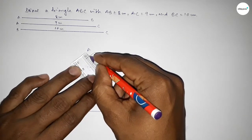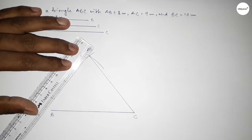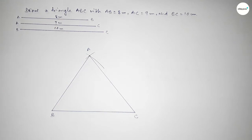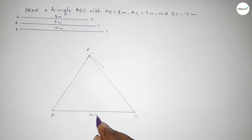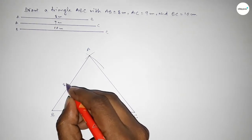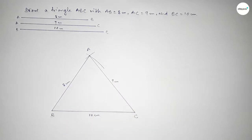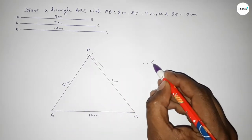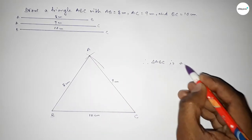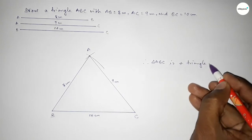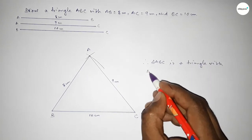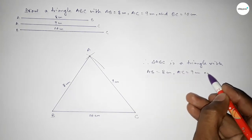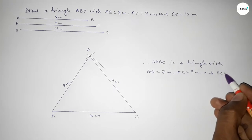Now joining A and C, next joining A and B to get the triangle ABC. So this side is 10 centimeters, AB equal to 8 centimeters, and this side is 9 centimeters. Therefore triangle ABC is a triangle with AB equal to 8 centimeters, BC equal to 10 centimeters, and AC equal to 9 centimeters.